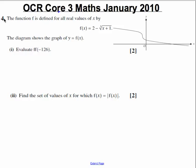Hi there. The following video will answer question 4, part i and ii of the OCR Core 3 Maths January 2010 paper. Okay, let's start off. It tells us that a function f is defined for all real values of x by this function here. f of x is equal to 2 subtract the cube root of x plus 1.